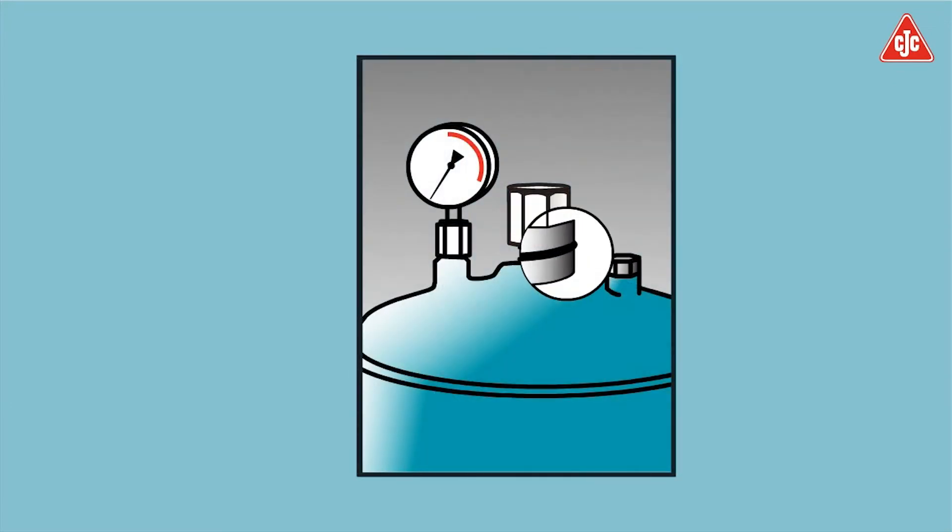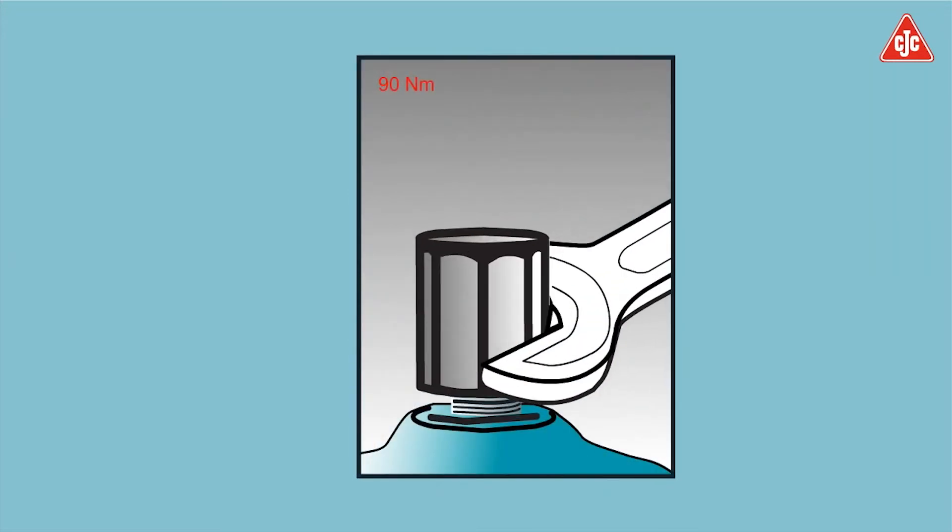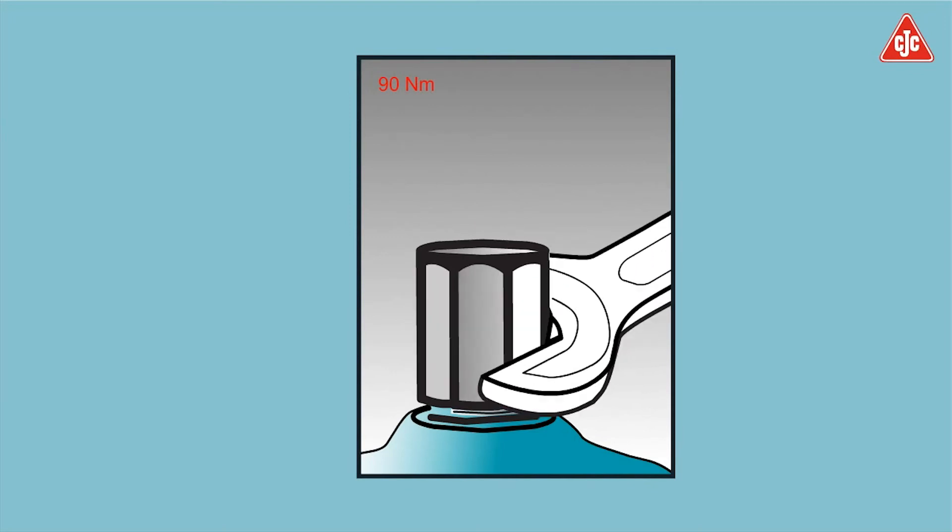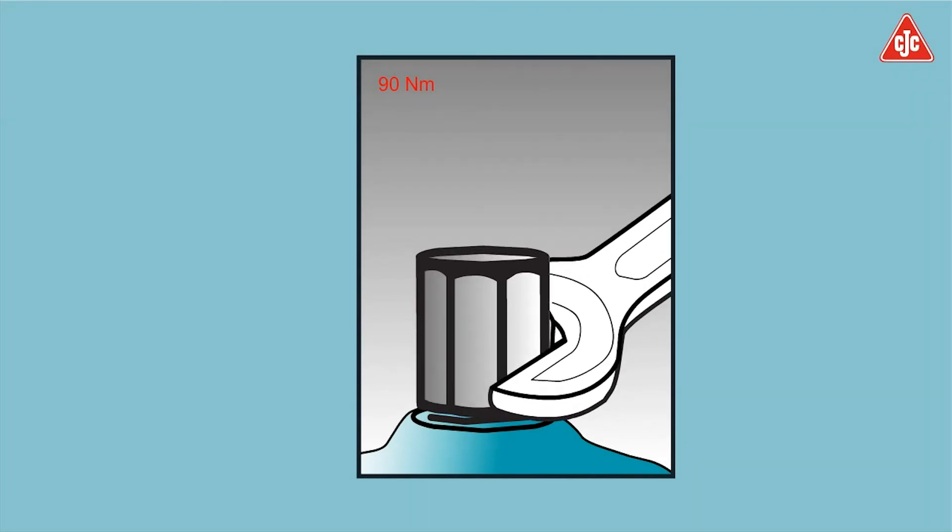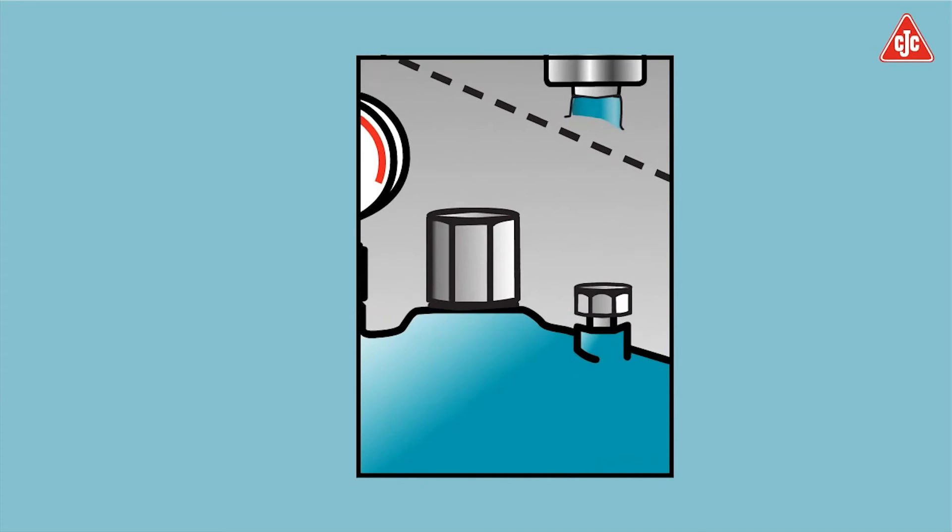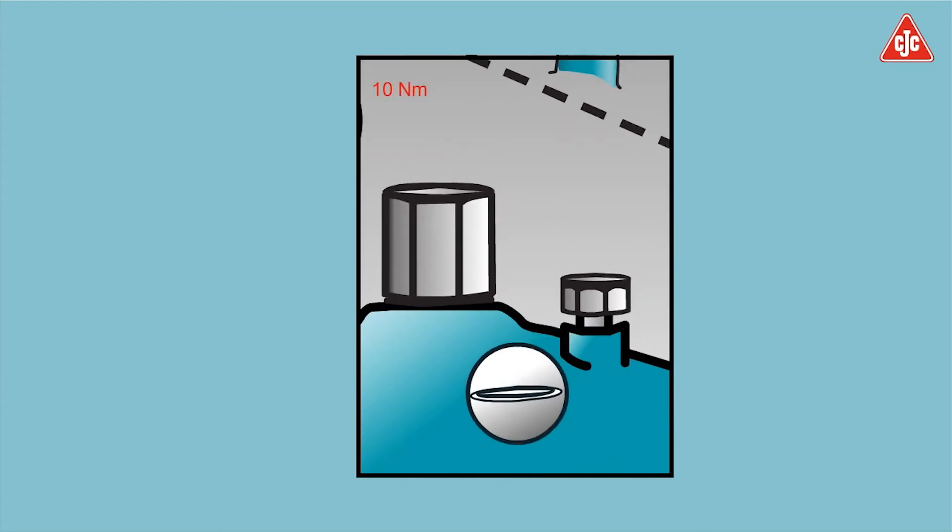Replace O-ring for top nut. Tighten top nut with torque of 90 Nm. If equipped with an automatic air vent, no action is taken. If equipped with an air vent screw, replace the O-ring for air vent screw and tighten with torque of 10 Nm.